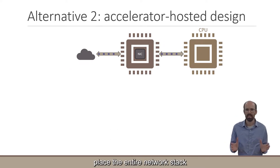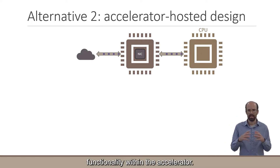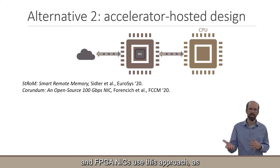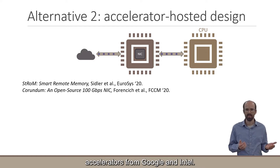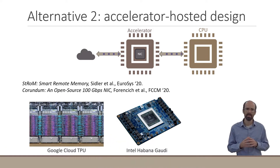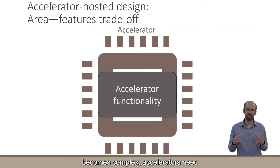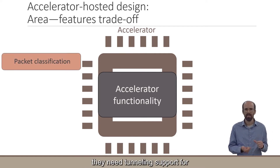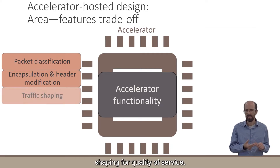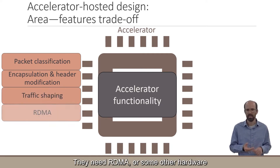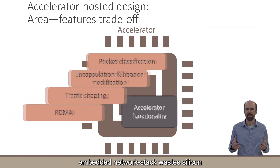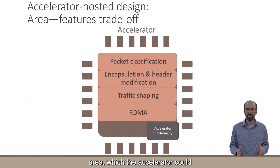Alternatively, some designs place the entire network stack functionality within the accelerator. Research works on network-attached FPGAs and FPGA NICs use this approach, as well as machine learning training accelerators from Google and Intel. Unfortunately, as the data center network becomes complex, accelerators need access to advanced network features — packet classification, tunneling support for virtual networking, traffic shaping for quality of service, and RDMA or some other hardware transport layer. Adding these features to the accelerator's embedded network stack wastes silicon area, which the accelerator could otherwise use, increasing performance or increasing costs.